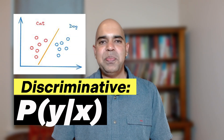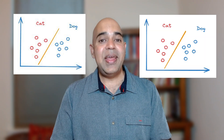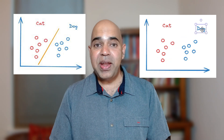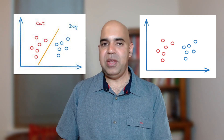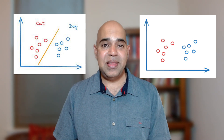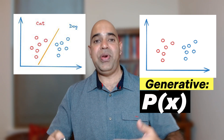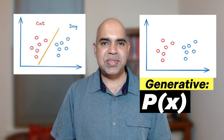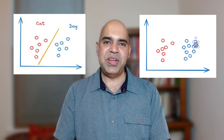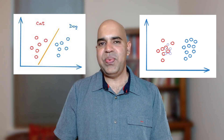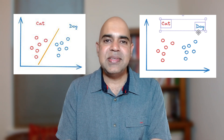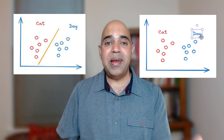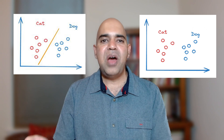In generative learning, we are not interested in learning the probability of a class label given input x. Rather, we are interested in the probability of generating the data point itself. We want the model to understand the essence of cats and dogs and hence generate them. We can train a neural network that captures the essence of both cats and dogs. Even without knowing the labels, the model can learn to represent the underlying distributions of these class labels.